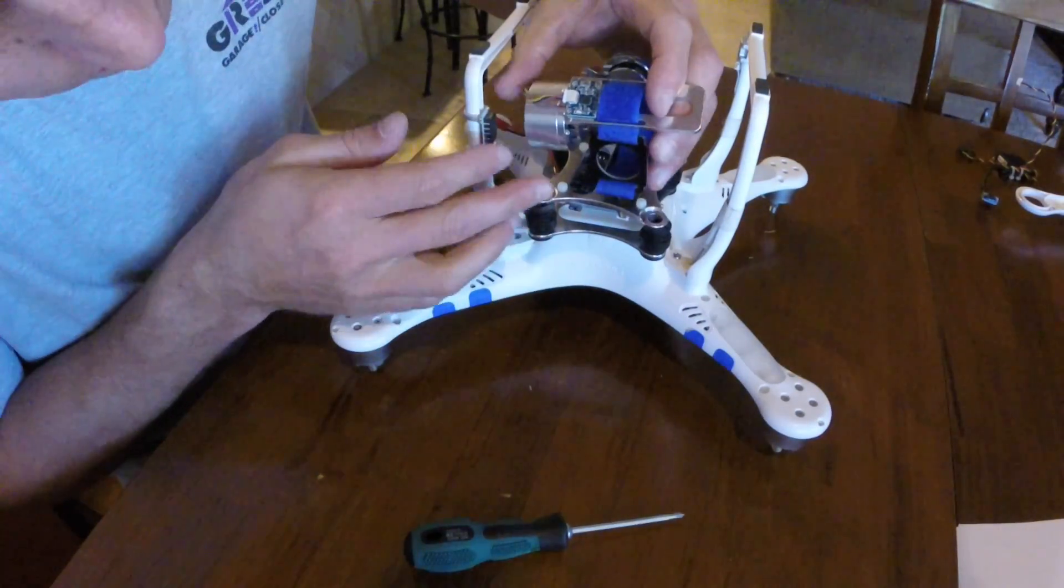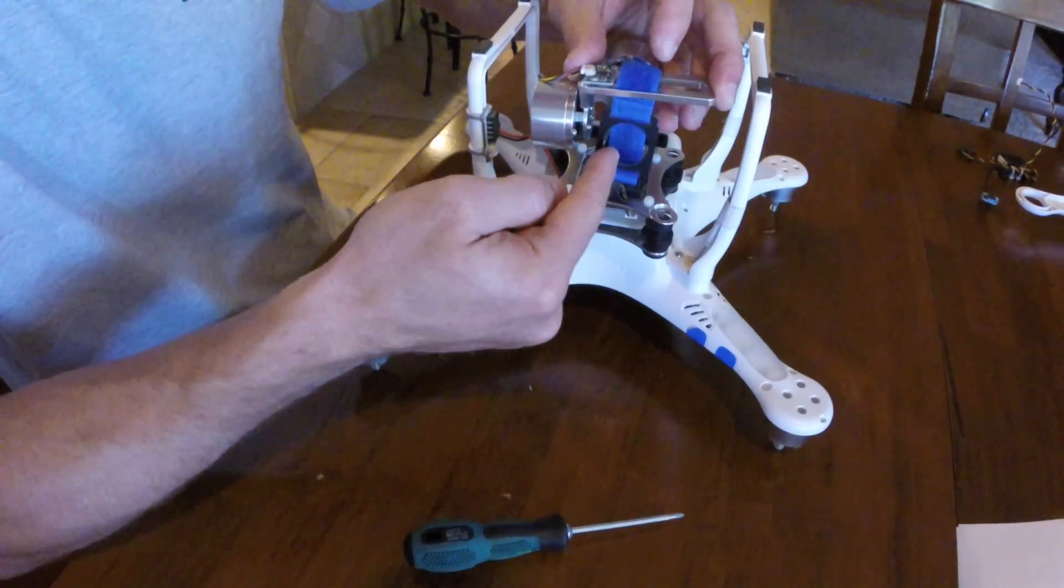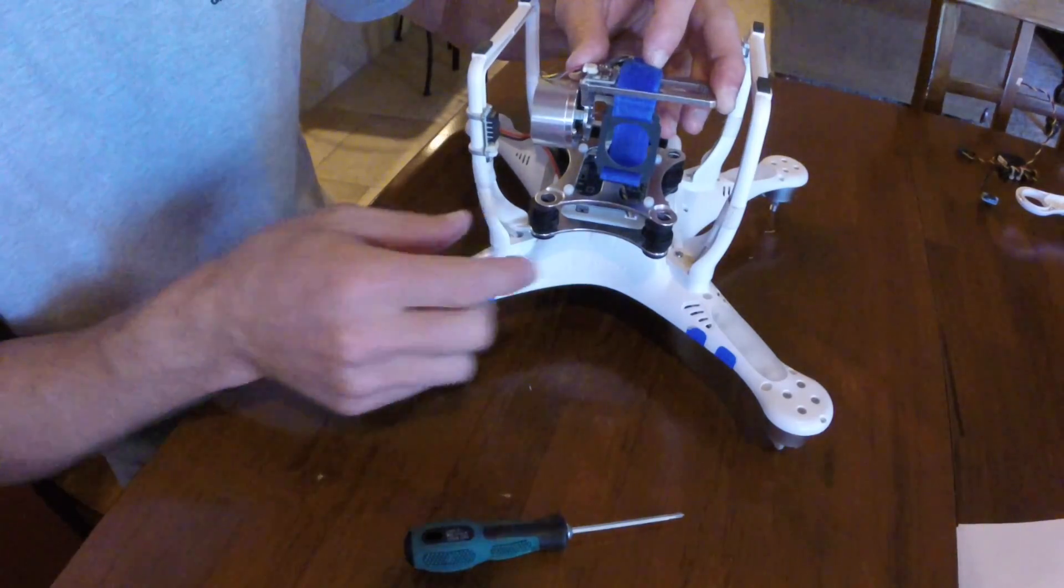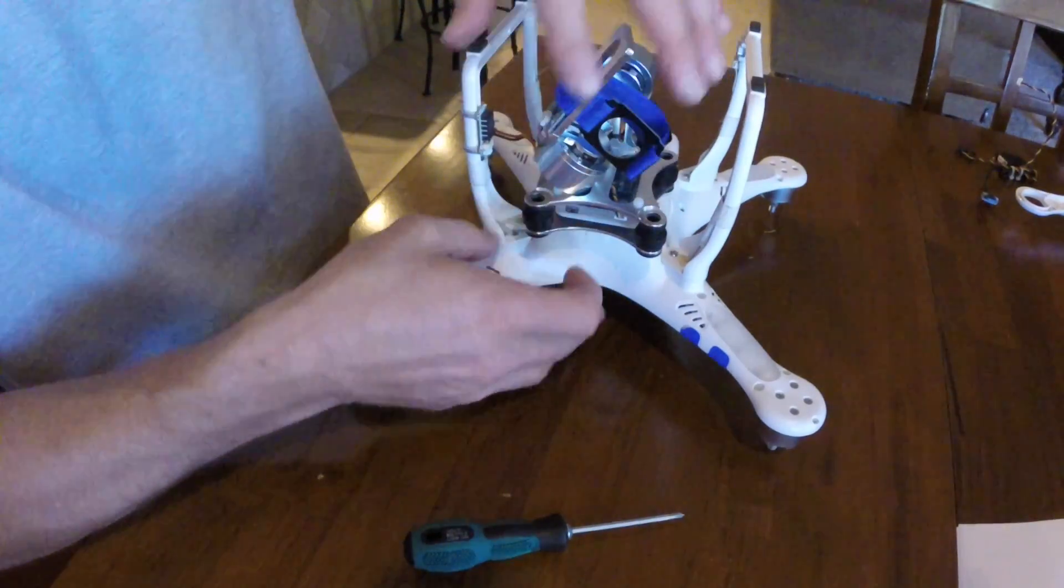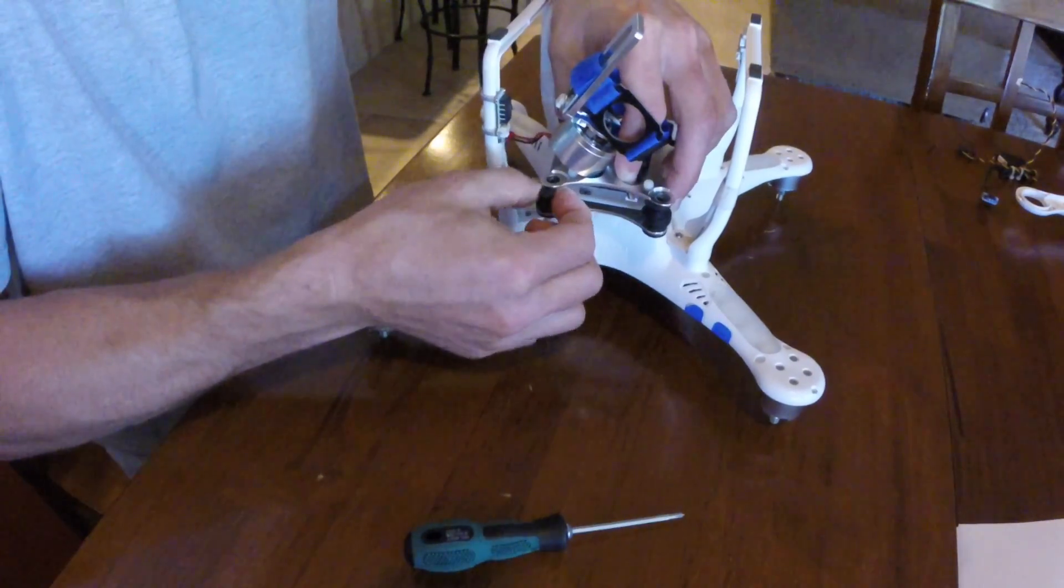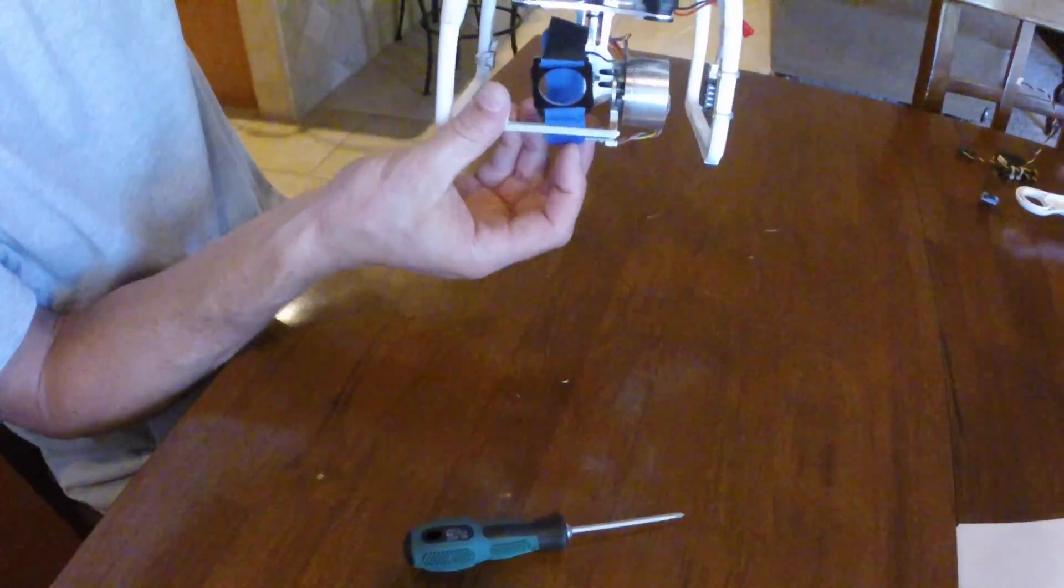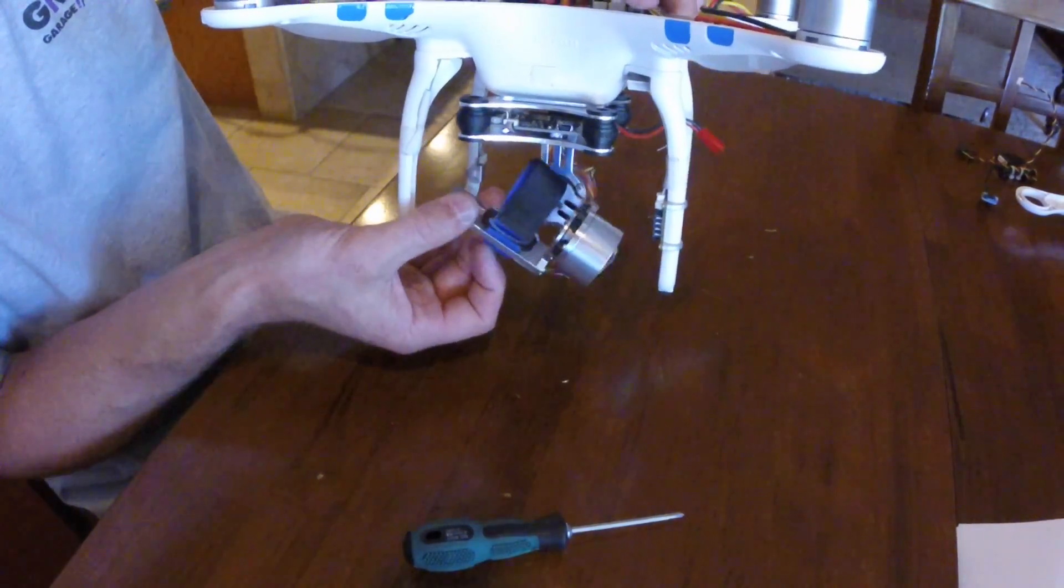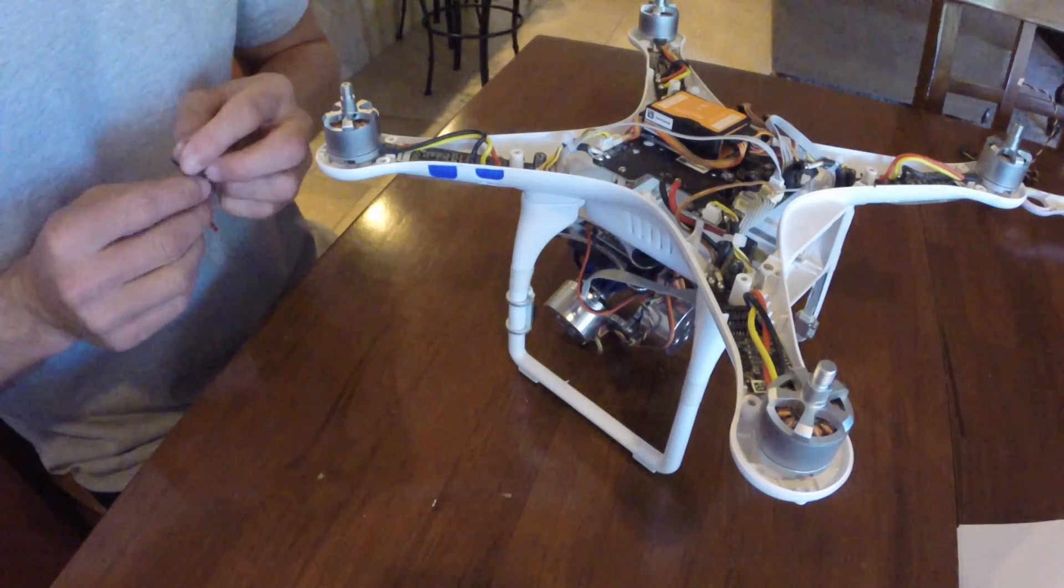Now we're going to attach the gimbal to the rubber bumpers. This can be a little tricky and will require you to be delicate as you push the rubber through the hole in the opening. You don't want to push too hard or pull too hard as you could rip or tear that rubber bumper. Be careful when installing this. Make sure you've installed the gimbal properly with the attachment facing towards the USB port on the Phantom and the motor facing towards the back where the battery lies.